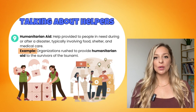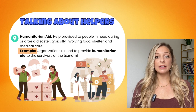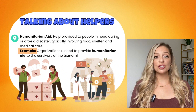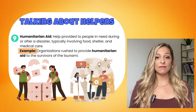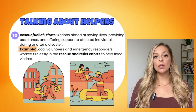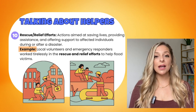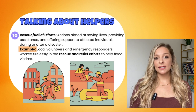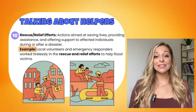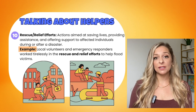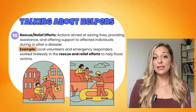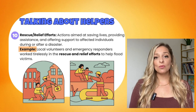Speaking about the helpers, I have a few more words for you. Number nine is humanitarian aid. This refers to help provided to people in need during or after a disaster, and it usually involves food, shelter, and medical care. For example: organizations rushed to provide humanitarian aid to the survivors of the tsunami. Word number ten is rescue or relief efforts. These are actions aimed at saving lives, providing assistance, and offering support to affected individuals during and after a disaster. For example: local volunteers and emergency responders worked tirelessly in the rescue and relief efforts to help flood victims.